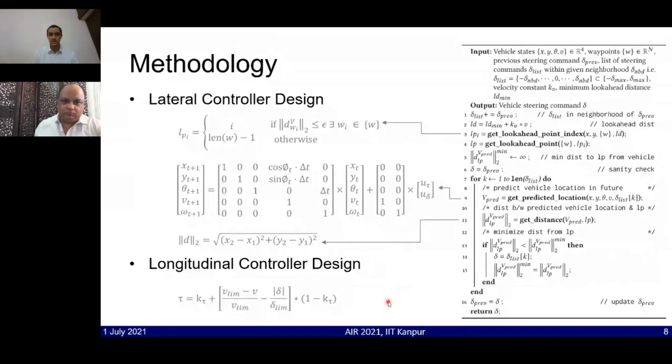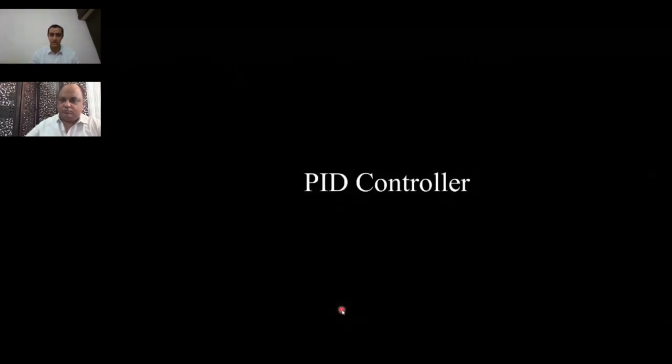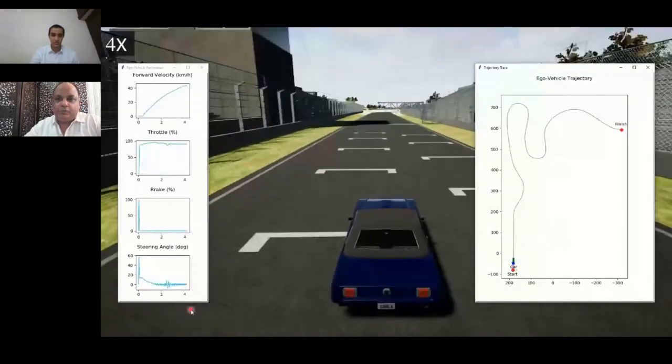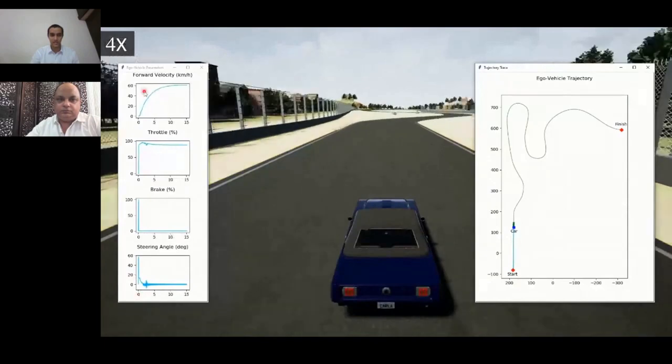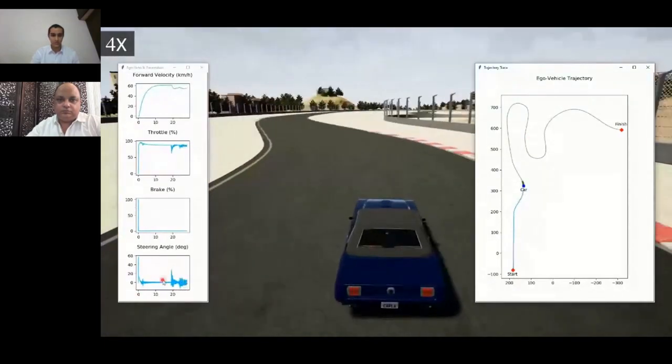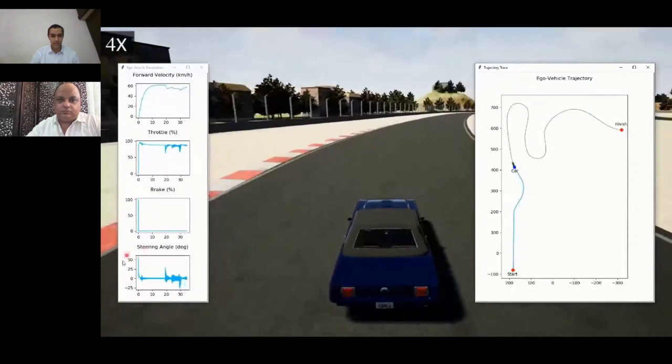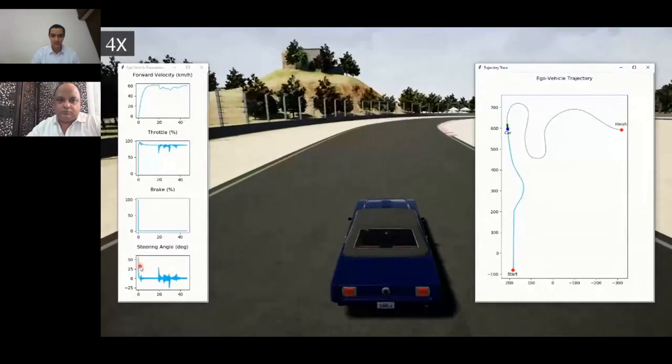Coming to the results, here I will be demonstrating the dynamic simulation test for the different controllers. Firstly, coming to the PID controller, as you can see in the simulation, on the left hand side we have the vehicle state and on the right hand side we can see the trajectory. The key thing to note in case of PID controller is that it is overshooting initially to above 50 degrees in terms of steering angle.